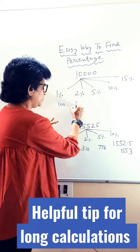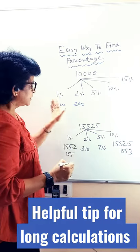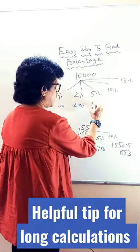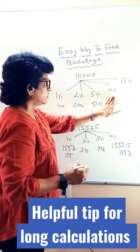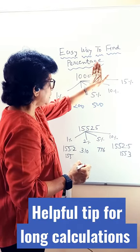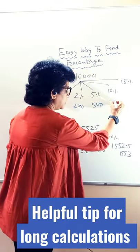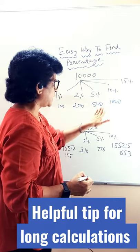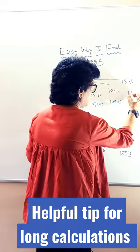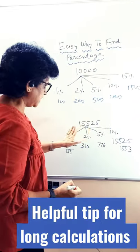Double of it becomes 2%, that is 200. 5 times you will get 5%, that is 500. To find 10%, hide only 1 digit. You are going to get 1000. And 15% means 5 plus 10 becomes your 1500. In the same manner,